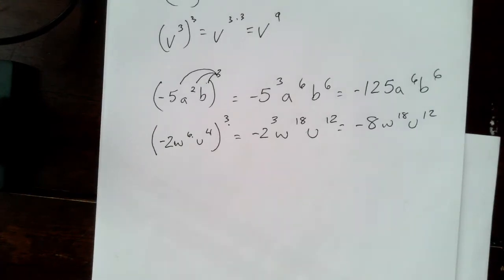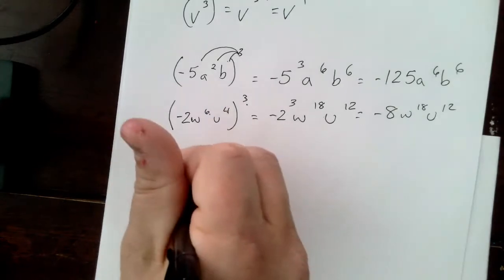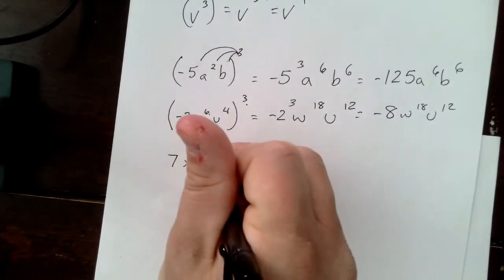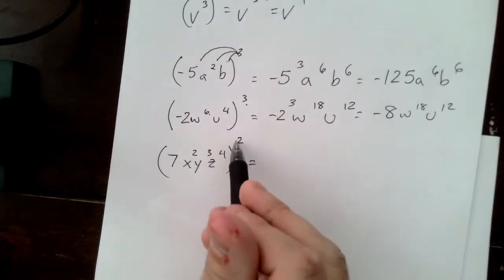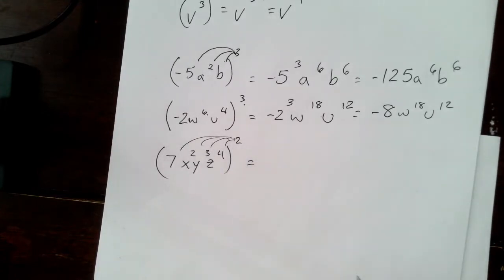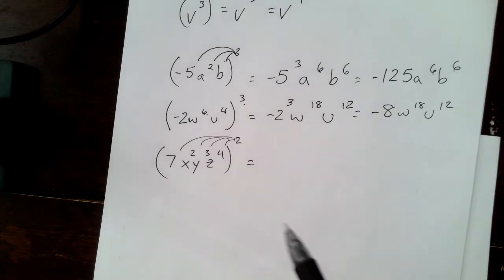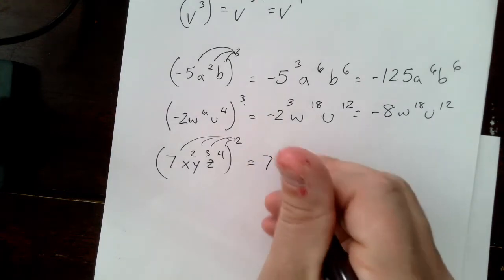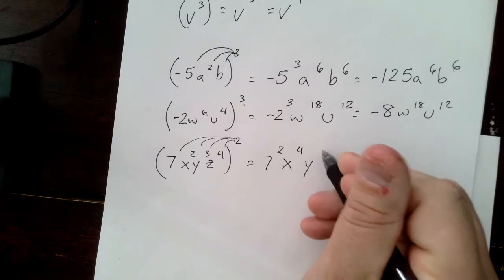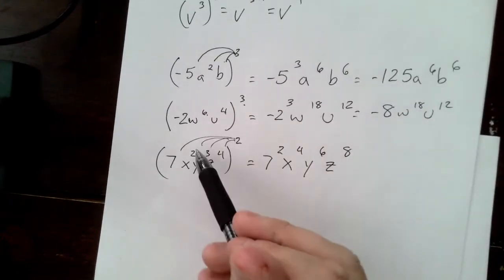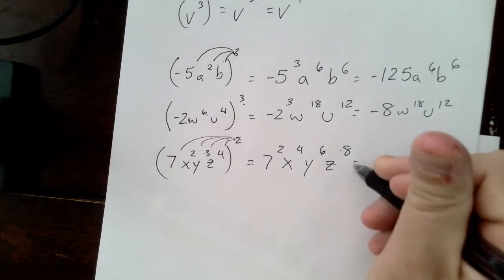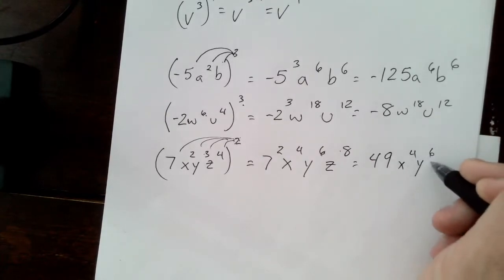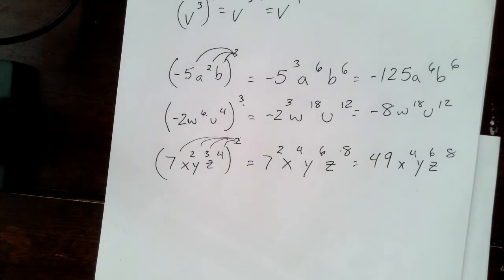Let's do one more. Seven, x squared, y cubed, z to the fourth, all squared. That squared is going to be distributed to everything inside that has an exponent. Even though seven doesn't have an exponent written, it does have an exponent — the exponent is one, we just don't write it. So this becomes seven squared, x to the fourth, y to the sixth, z to the eighth, because two times two is four, three times two is six, four times two is eight. That simplifies to forty-nine x to the fourth, y to the sixth, z to the eighth.